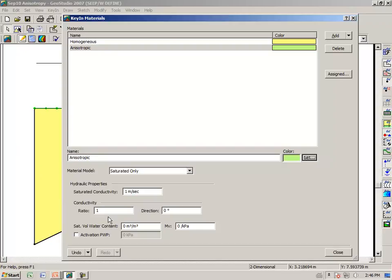And this time we will say that the ratio of ky to kx is 0.1. And the direction is 26.57 degrees.